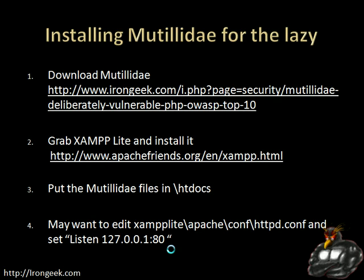Installing Mutillidae — for the very lazy people out there — essentially what you have to do is download Mutillidae; it's in a zip file on my website. Next, grab XAMPP. XAMPP is a really neat little package that bundles together Apache, MySQL, PHP, and a few other odds and ends all into one little folder. They have a Linux version and a Windows version; I'm going to be using the Windows version today. For the Windows version, you just basically extract it somewhere and run the setup so it puts all the environmental variables in the right location, and then you have a fully functioning Apache web server running on your machine with PHP, MySQL, and a bunch of other software.